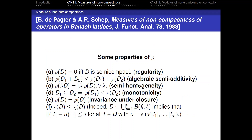In the Schap paper, there are similar properties for ρ. Regularity: ρ(D) = 0 if and only if D is semi-compact. There are also properties of algebraic semi-additivity, semi-homogeneity, monotonicity, and invariance under closure. Importantly, ρ(D) ≤ χ(D).